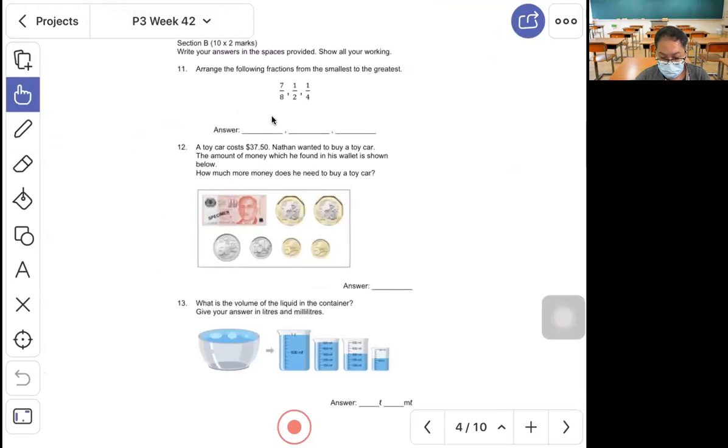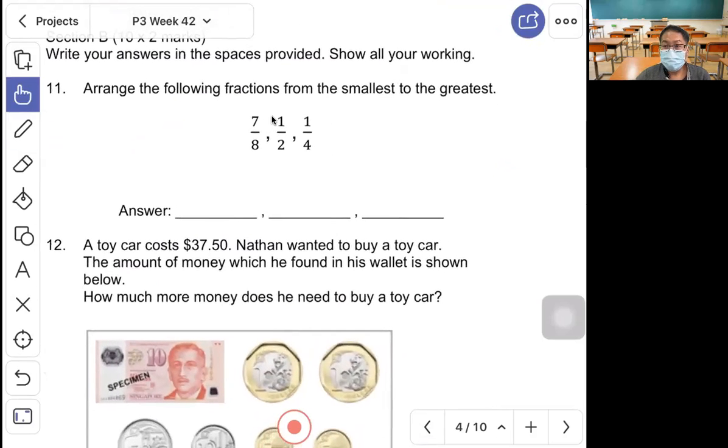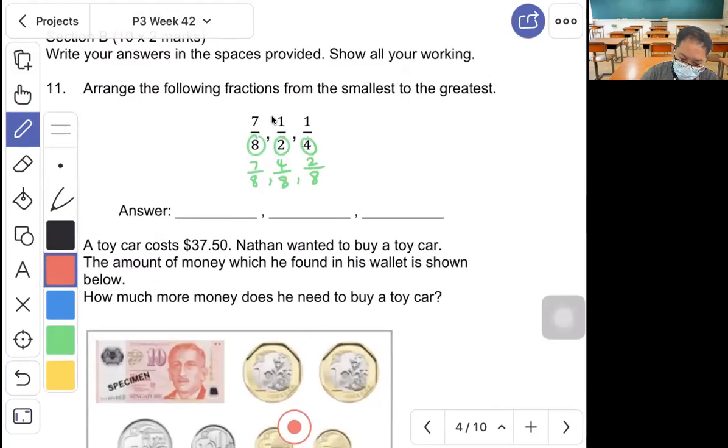Question 11, arrange the following fractions from smallest to greatest. Make them the same denominator: 7/8 stays, 1/2 becomes 4/8, 1/4 becomes 2/8. The smallest is 2/8 which is 1/4, followed by 4/8 which is 1/2, followed by 7/8.